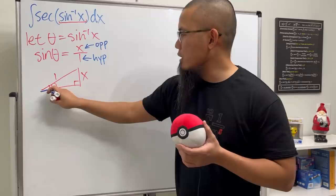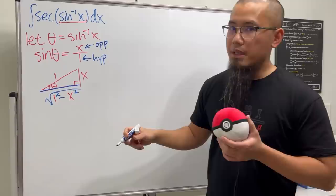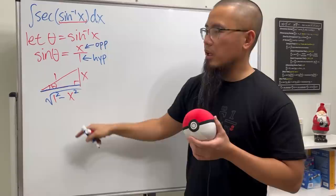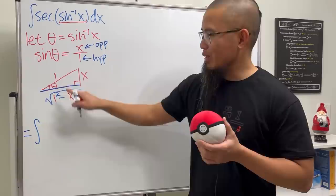And then to get secant of that, we can just look at this picture and we do hypotenuse over adjacent. So this right here is just the integral of 1 over that.